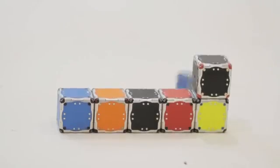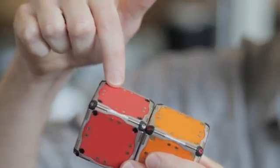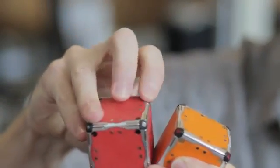The magnet system in the cubes is one of its key features. So we have face magnets. There's eight face magnets that provide some coarse alignment. And then there's these edge magnets, which are free to rotate.